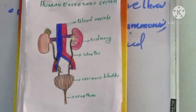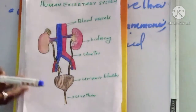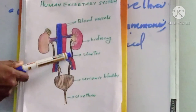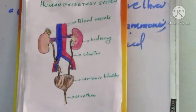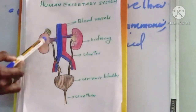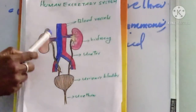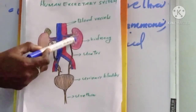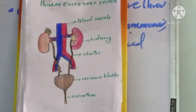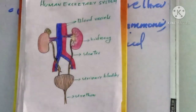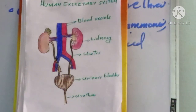Human beings have two kidneys, located in the abdominal cavity. Each kidney contains thousands of tiny tubular structures that work as filters.